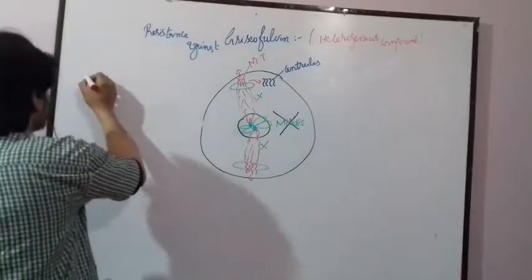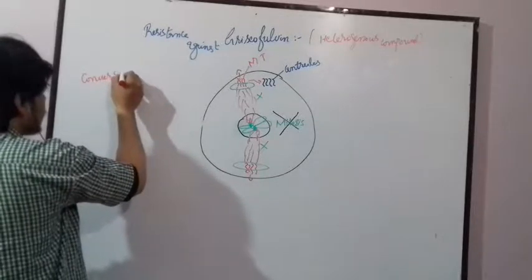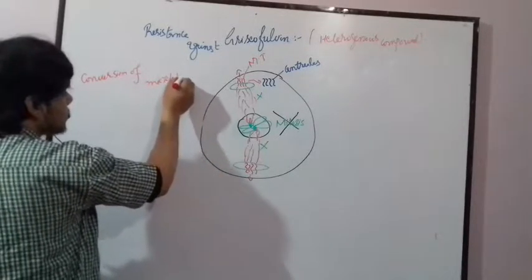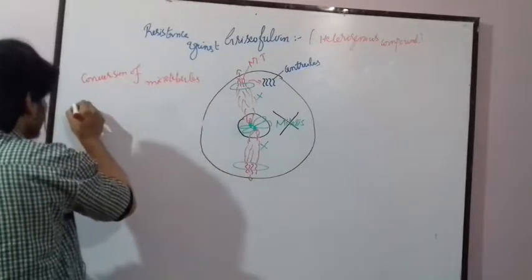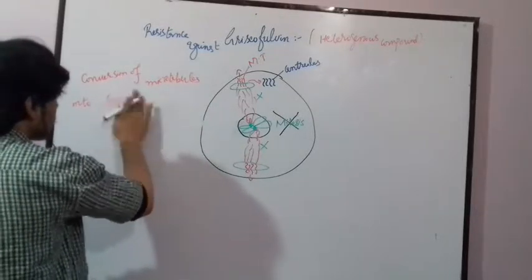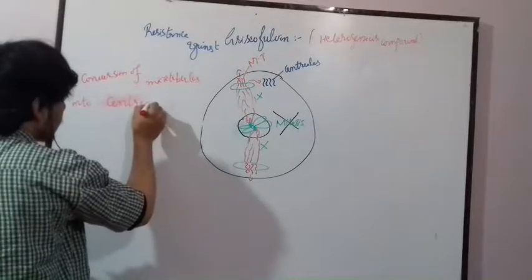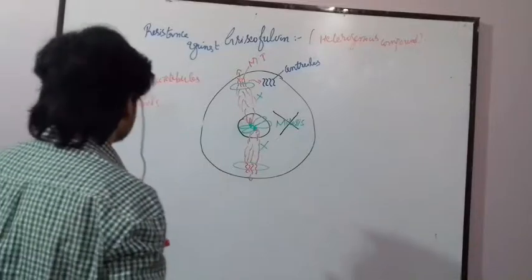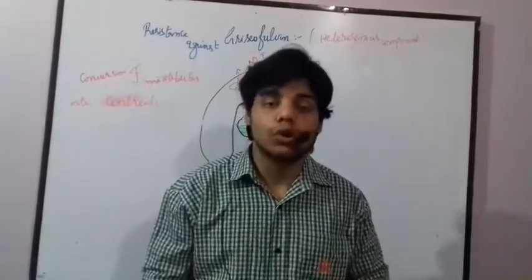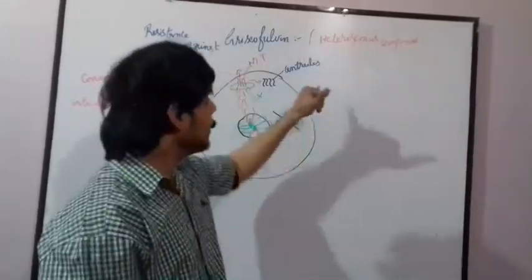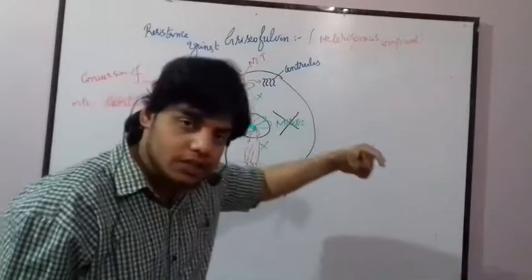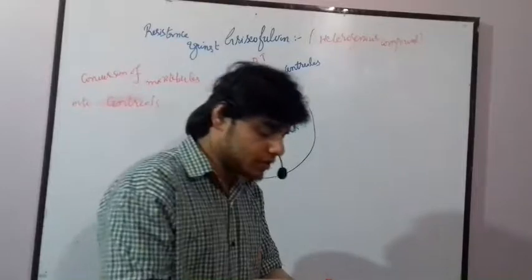The first resistance is the conversion of microtubules into centrioles. Once the microtubules are converted into centrioles, the drug will not be effective — as discussed in the mechanism of action, griseofulvin acts against microtubules, not centrioles. So the fungi produce centrioles, and then the centrioles produce the spindle fibers.